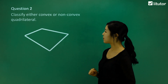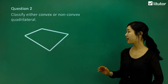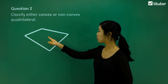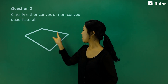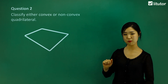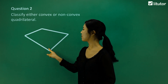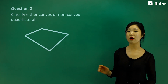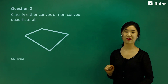Looking at question two, again we want to classify if it's convex or non-convex. The vertices all point towards the outside of the shape. The diagonals here are inside the shape, and the angles are all less than 180 degrees — nothing looks like a reflex angle. So therefore, this is also convex.